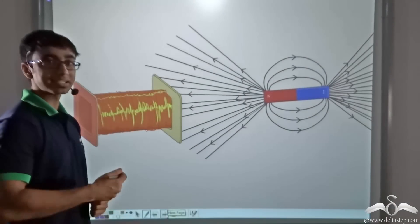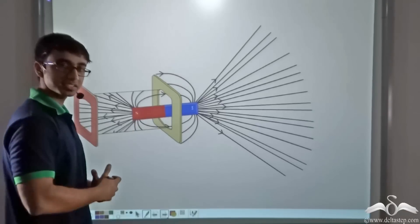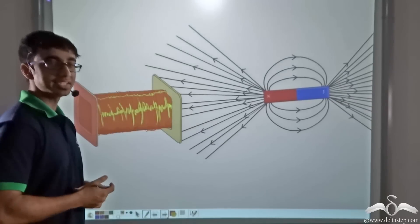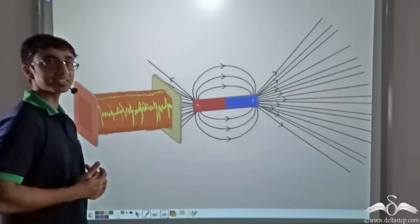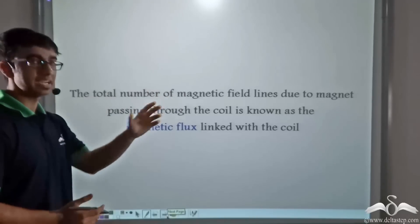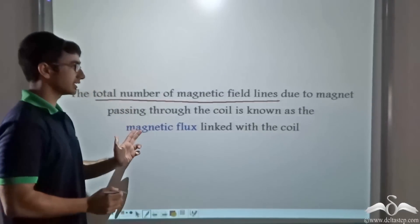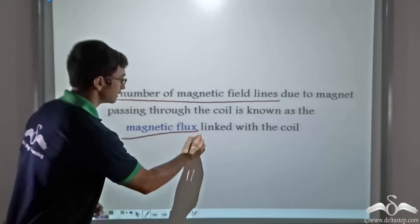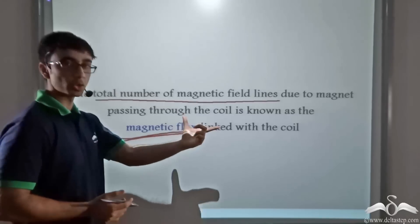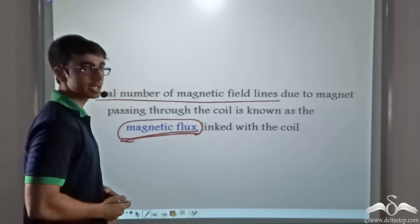Notice what happens when the magnet is moved. As the magnet is moved into the coil, the number of magnetic field lines through the coil increases. When it is moved away from the coil, the number of magnetic field lines decreases. So due to movement of the magnet, the number of magnetic field lines either increases or decreases. The total number of magnetic field lines due to the magnet passing through the coil is known as the magnetic flux linked with the coil. When field lines increase, magnetic flux increases; when they decrease, magnetic flux decreases.